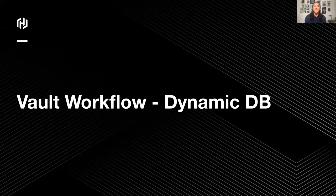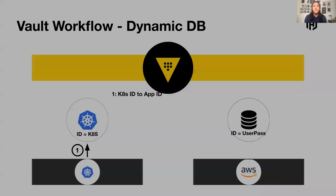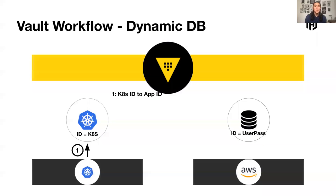Where things really start to get interesting with Vault is in some of the more dynamic capabilities. I'm going to talk through database patterns here, but we also do this for clouds, so while this example covers dynamic database credentials, you can also get dynamic cloud credentials. This diagram should look somewhat familiar from our previous KV workflow — all of these workflows are fairly similar with some minor variations in terms of the amount and types of steps.